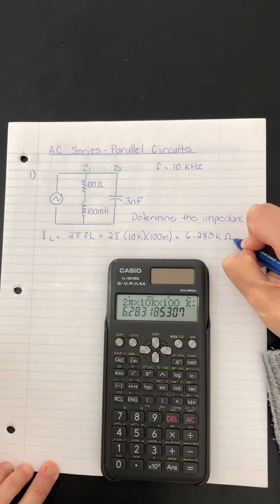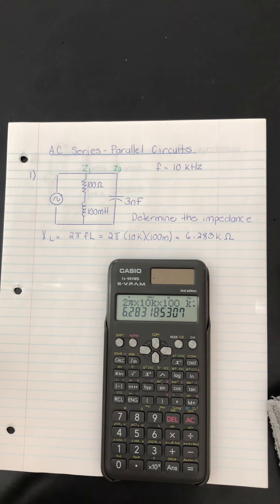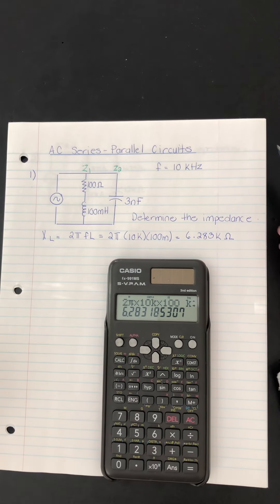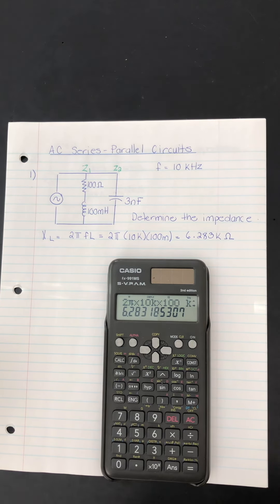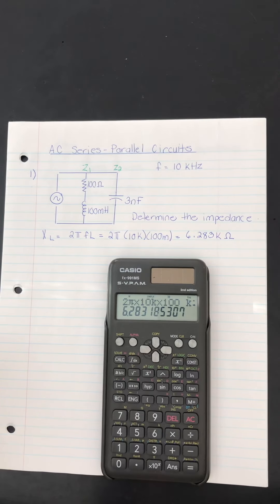So this is 6.283 kilo. And this would now be ohms. In all of these first calculations, I'm going to keep three decimal places in my numbers. And at the end, I'm going to round to three significant digits.